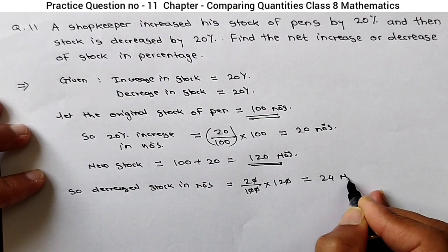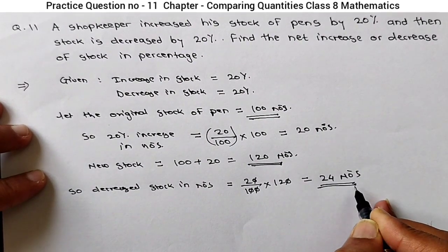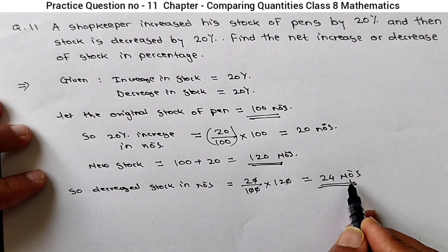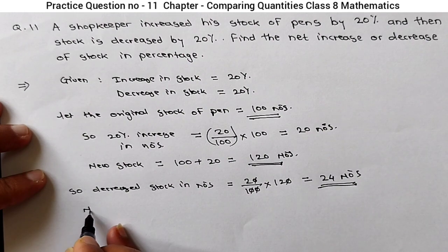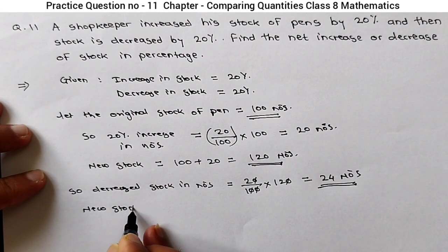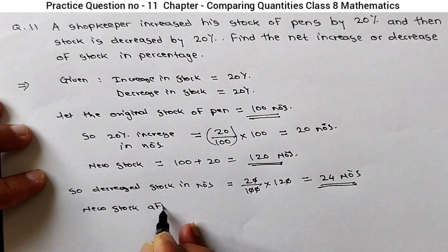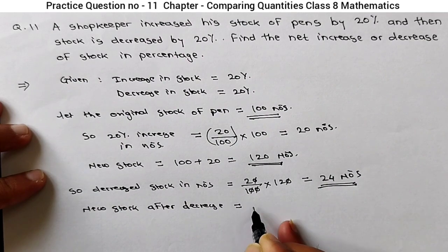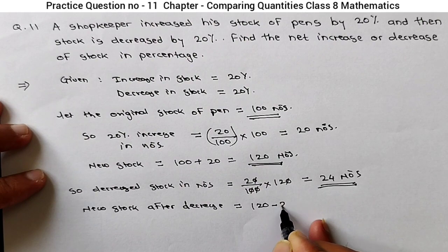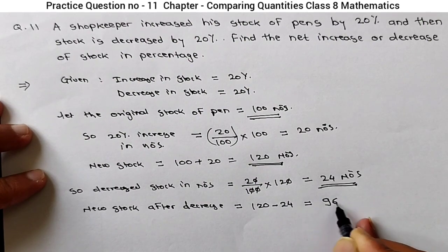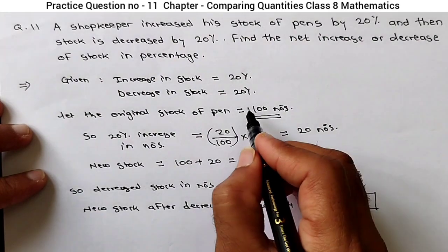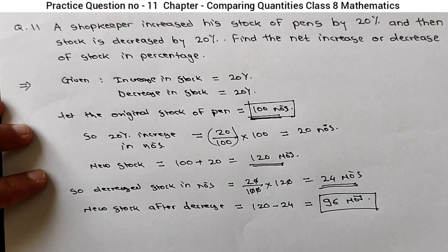So 24 numbers is the decrease. When the stock is 120, a 20% decrease means 24 numbers. New stock after decrease equals 120 minus 24, which equals 96 numbers. This is our final stock, and 100 numbers is our original stock.